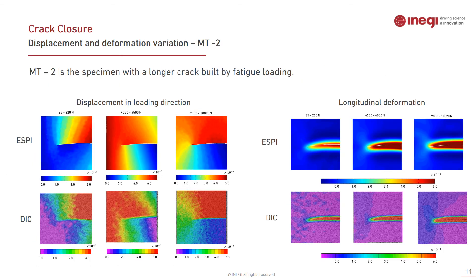For the second specimen MT2, which owns a larger crack on the limit of the crack length proposed by ASTM, no crack closure is observed. Even at 220 N the crack is already open and discontinuities are visible in ESPI and DIC displacement fields. As we approach the peak load this phenomenon becomes stronger. The longitudinal deformation on the right side also shows high strain values on the crack flanks, confirming the crack existence in the structure.